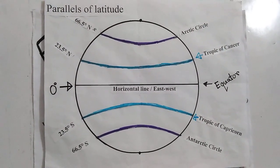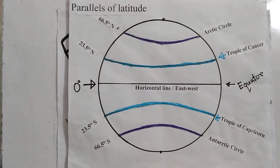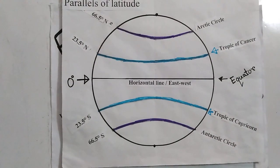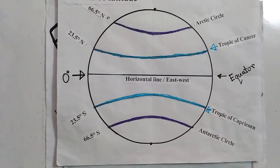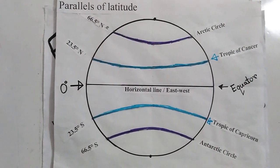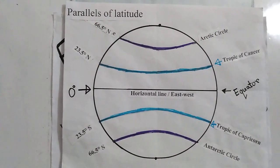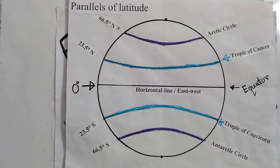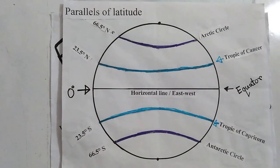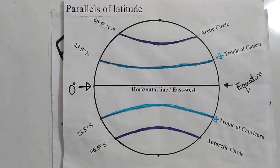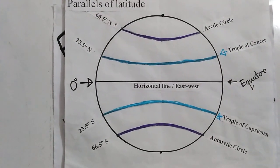Just above the equator, there is a horizontal full circle called the Tropic of Cancer. The Tropic of Cancer keeps 23.5 degrees distance from the equator. To the south side of the equator, another important parallel of latitude is the Tropic of Capricorn. To the north side, another important parallel is the Arctic Circle, which keeps 66.5 degrees distance from the equator. On the south side, the 66.5 degree circle is called the Antarctic Circle. These are very important parallels of latitude.